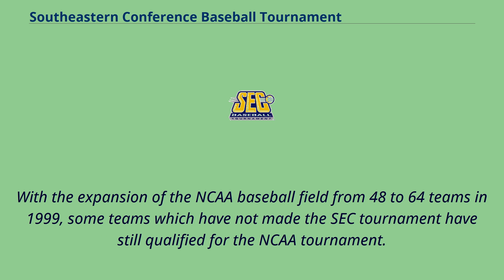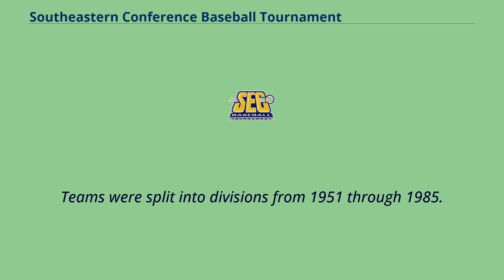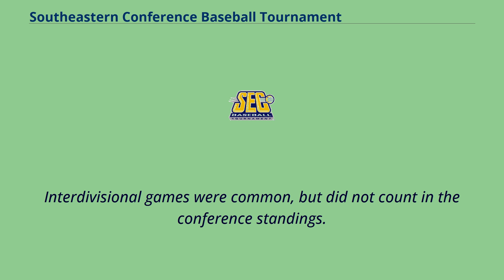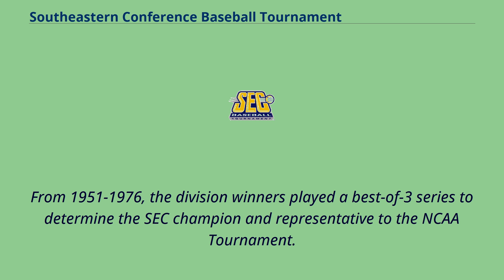With the expansion of the NCAA baseball field from 48 to 64 teams in 1999, some teams which have not made the SEC Tournament have still qualified for the NCAA Tournament. Teams were split into divisions from 1951 through 1985. Each team played the other four division opponents in home and home three game series. Interdivisional games were common but did not count in the conference standings. From 1951 to 1976, the division winners played a best-of-three series to determine the SEC champion and representative to the NCAA Tournament.